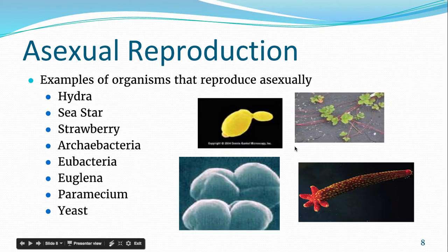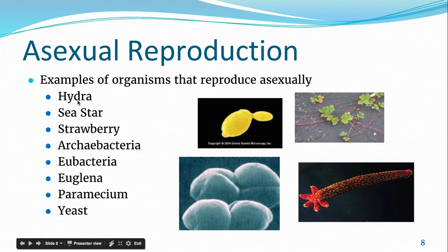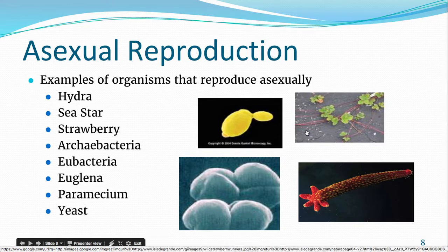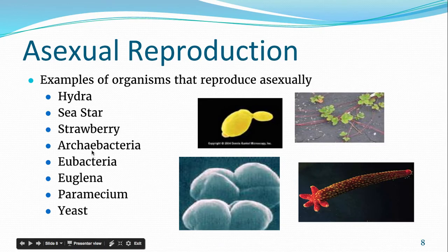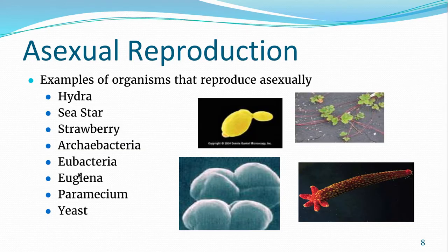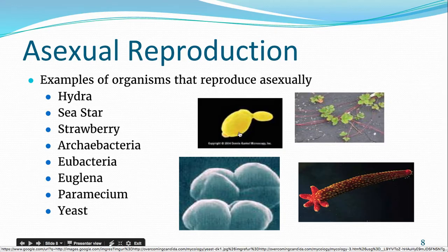Here are some examples of things that reproduce asexually — I expect you to know them. This is just a small list, not everything. Hydras and sea stars are animals that reproduce by either budding or fragmentation. Strawberries are an example of vegetative propagation. Archaeobacteria, bacteria, euglena, and paramecium — which are protists — reproduce by binary fission. And yeast is a fungus that reproduces by budding, similar to the way hydra does: a little bud will break off and grow into a new individual.